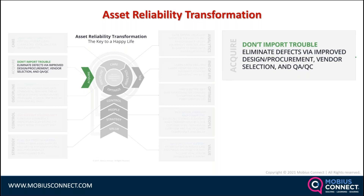Starting from the beginning of an asset's life: number one, our goal has to be to ensure that we do not import trouble into the plant — that is a defect elimination mindset. The selection process for spares, new components, and plant expansions must be based on lifecycle costs of the equipment. We have to perform acceptance testing so that what comes in the door is in good condition, without hidden bearing faults or design problems. This applies to vendors rewinding our motors or overhauling our gearboxes as well.